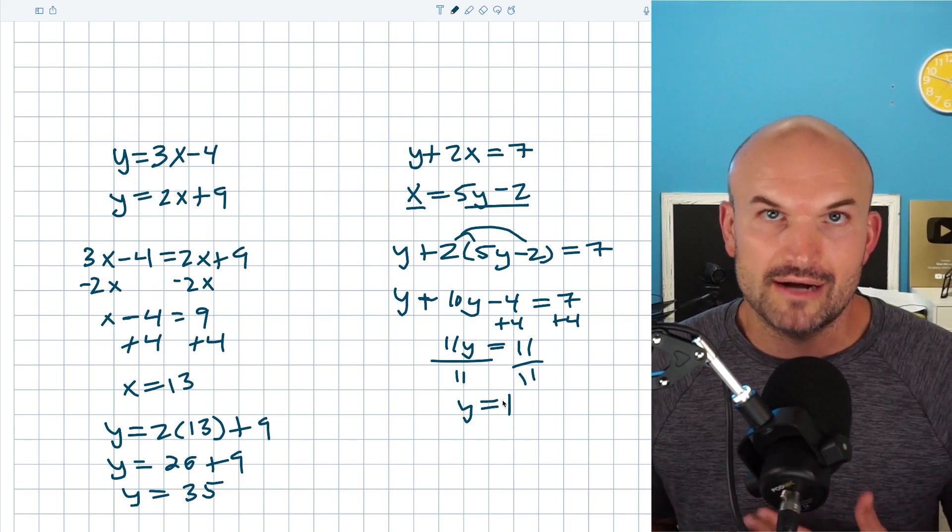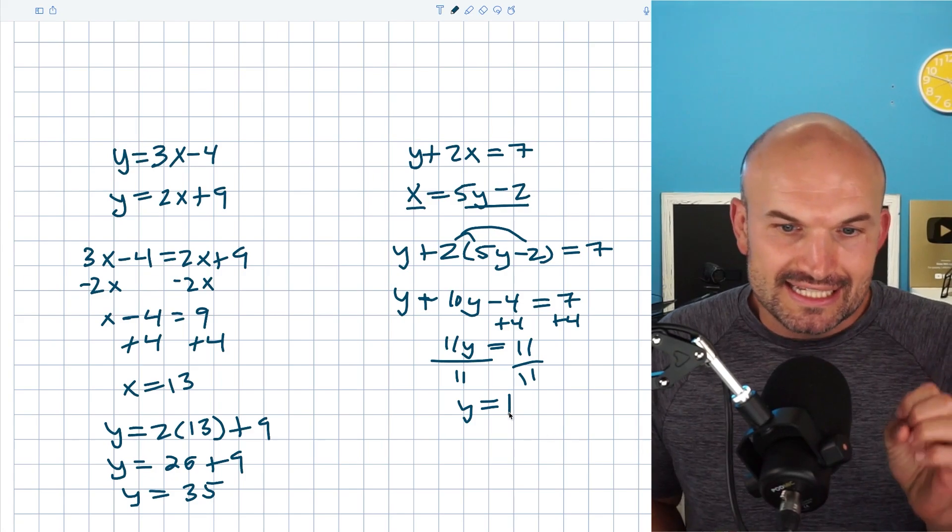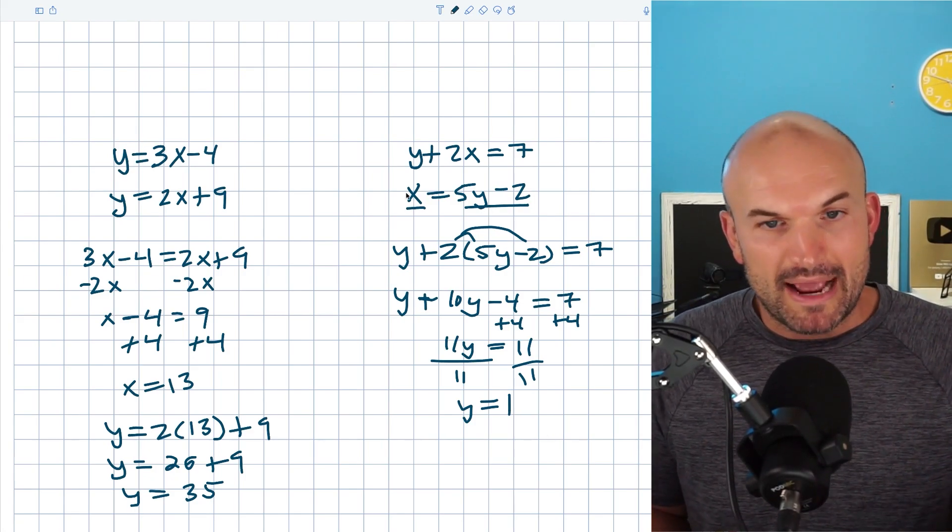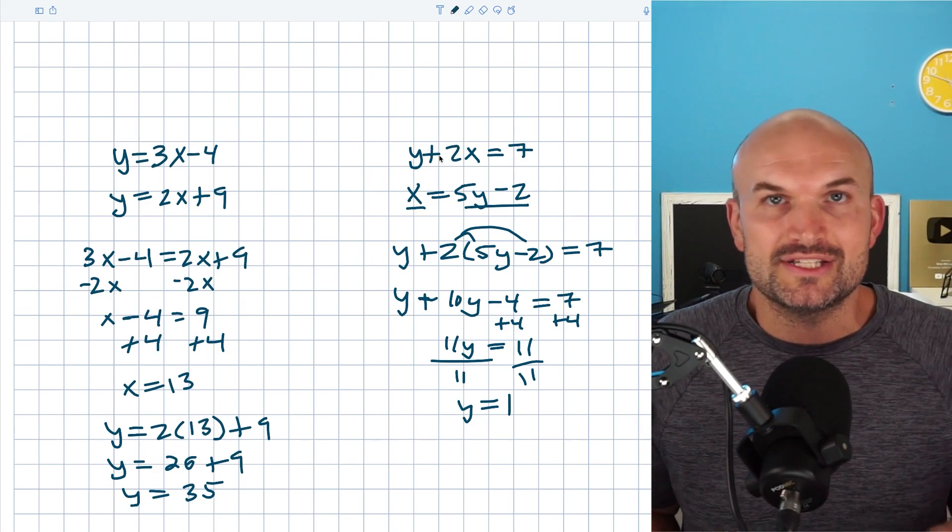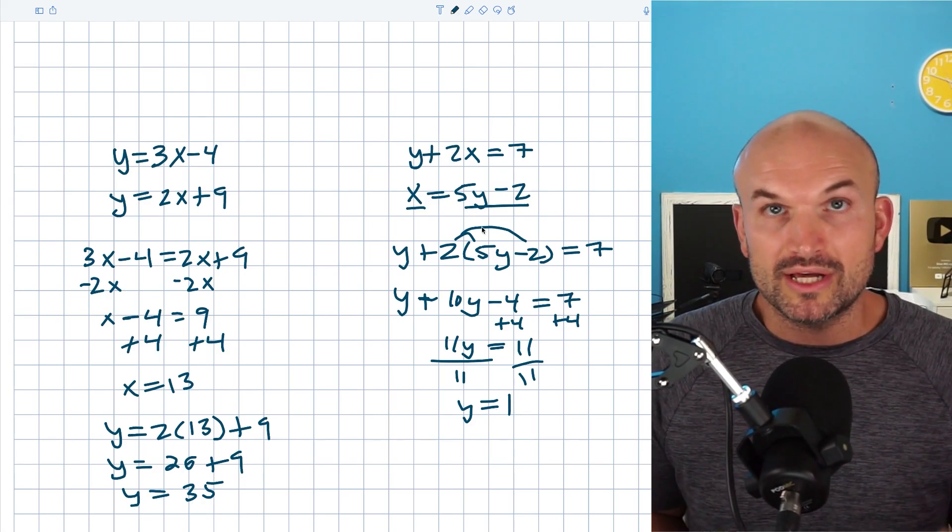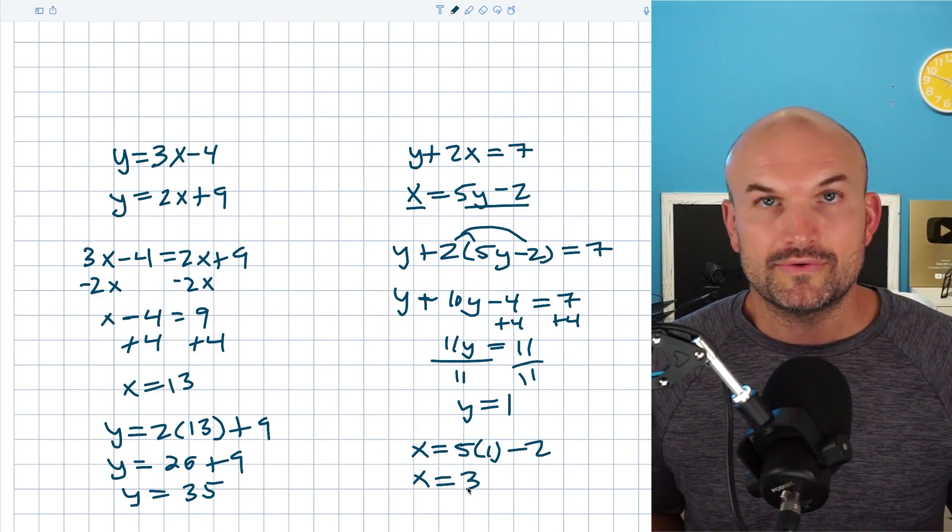Now, again, the cool thing is I just figured out my value of y. I already have an equation that is isolated for x. I can simply just plug the 1 in for y in my bottom equation. You could do it in the top, but then you have to do a little bit of work to go ahead and solve for y. So I'm just going to take this value, plug it into my bottom equation. And when I do that, I get 5 times 1, which is 5 minus 2. Therefore x is equal to 3.